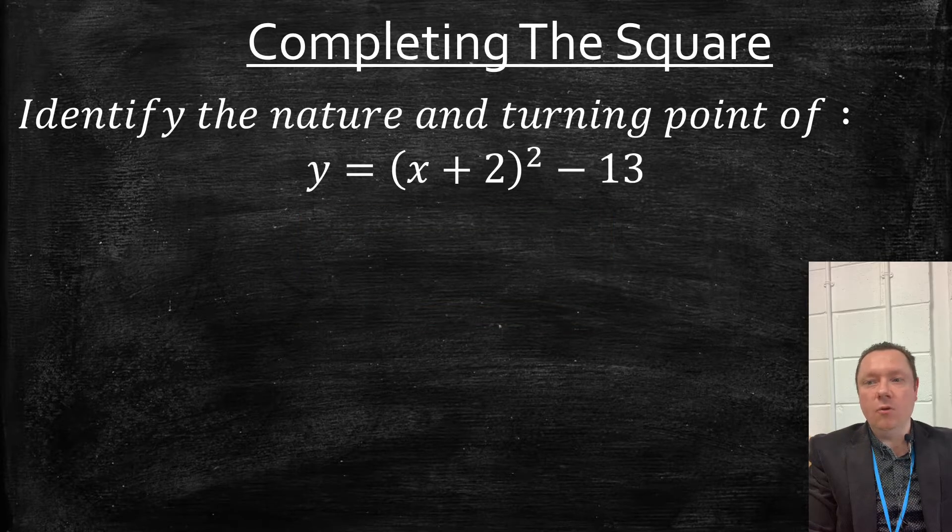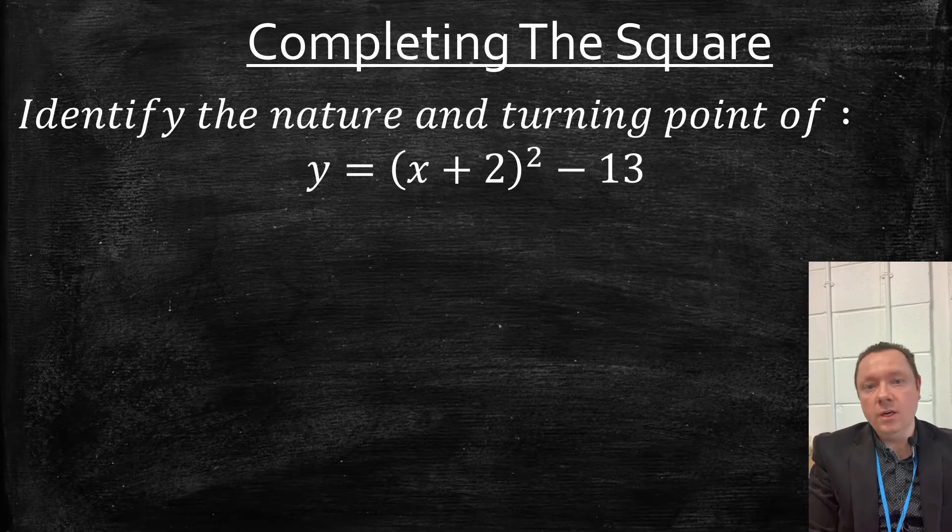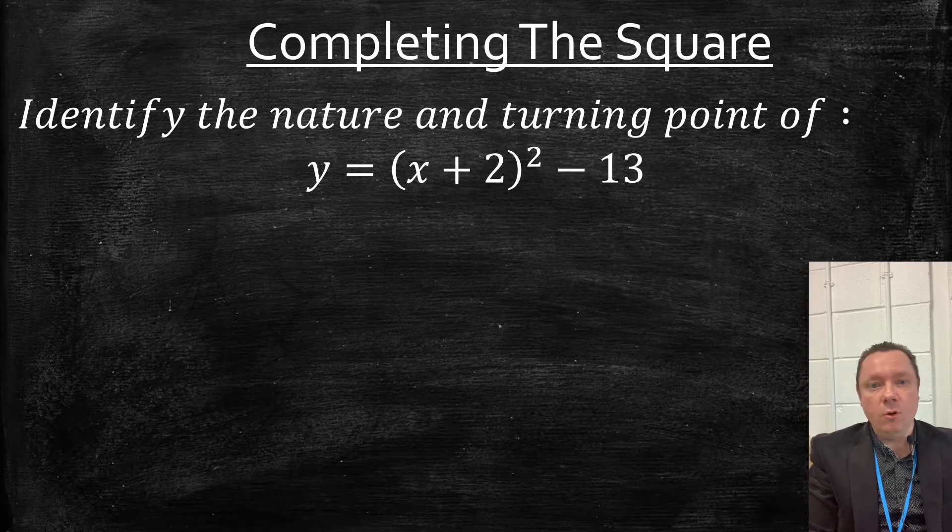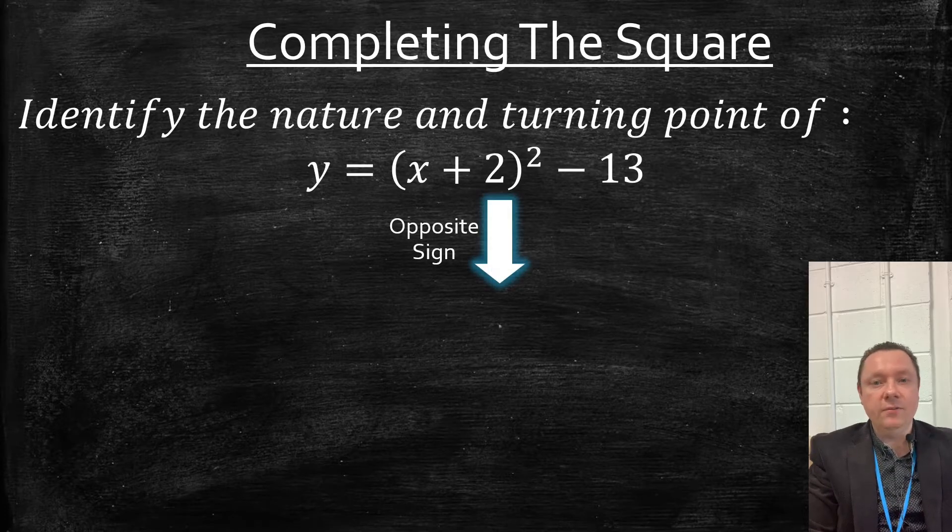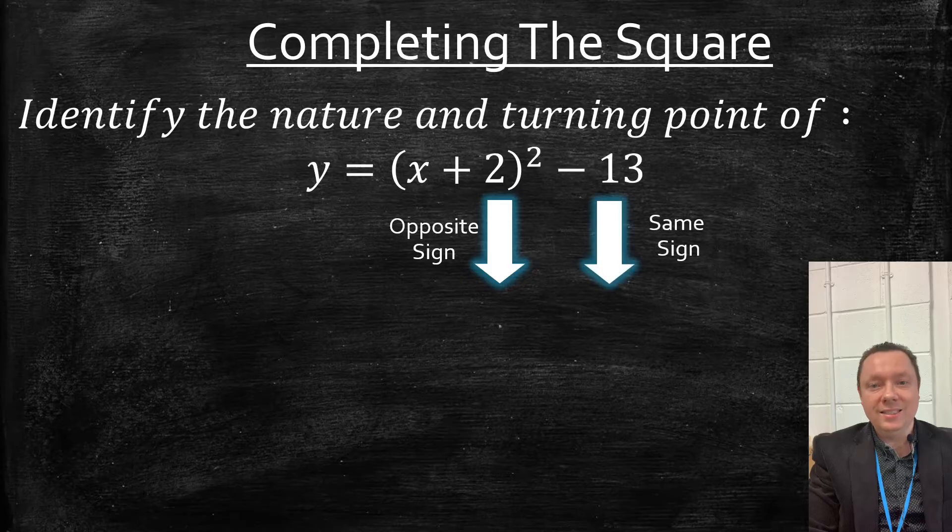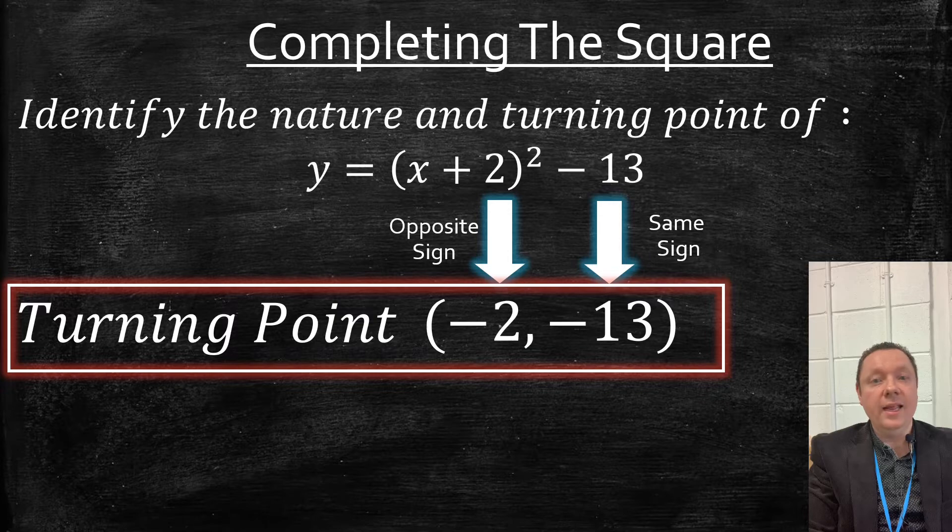Identify the nature and turning point of y = (x + 2)² - 13. Now with this one, you can see it's in completed square form, so the turning point is so easy. Opposite sign for the first number, same sign for the second number. In other words, the turning point is (-2, -13).